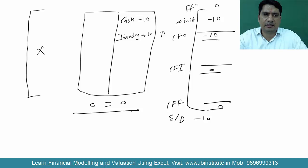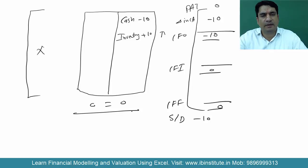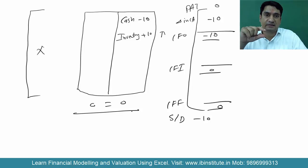When this question is asked in an interview, some candidates only say inventory will be up and cash will be minus — but that is not enough. You should explain the effect on all three statements. In the cash flow statement, change in current asset will be minus 10, CFO will be minus 10, surplus will be minus 10, and closing cash will be minus 10. You should verify total assets increased versus total liabilities increased and confirm the balance sheet nets to zero.